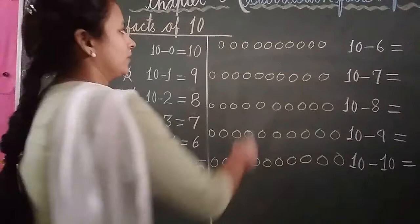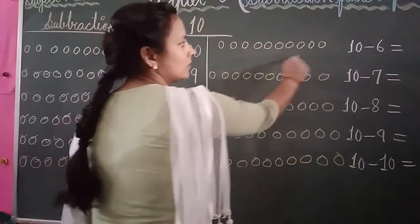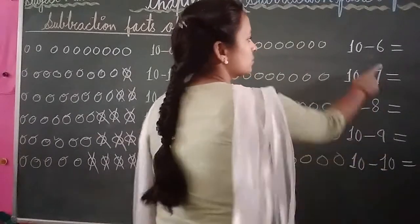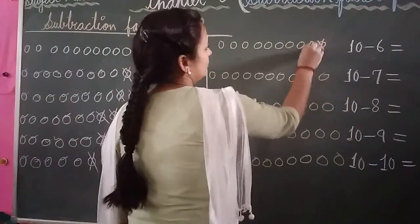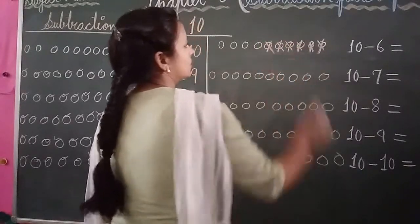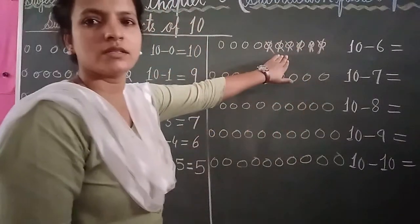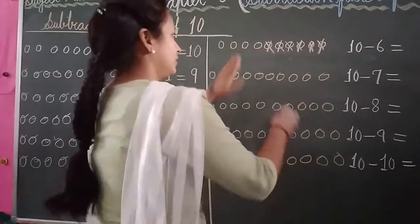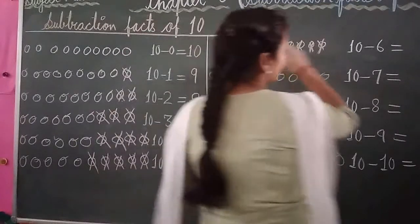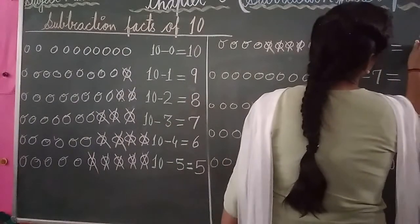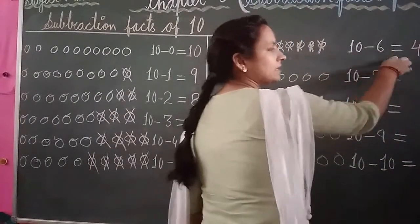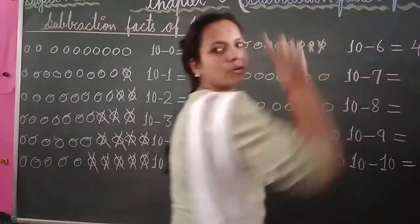After that, again draw your 10 balls. Write: 10 minus 6. Cut and cross out 6 balls: 1, 2, 3, 4, 5, 6. Count the balls left: 1, 2, 3, 4. How many balls are left? 4. 10 minus 6 equal to 4. The answer is 4.